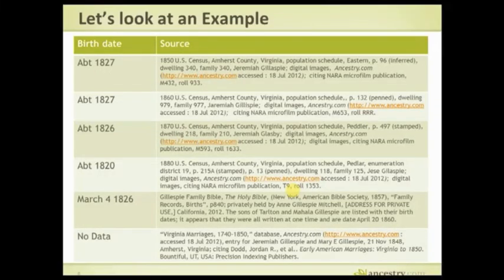Out of all these sources, these are all the possible birth dates I have for Jeremiah. There's the 1850, 1860, 1870, and 1880 censuses. These could be accurate — we hope they are — but they may not be. They give me dates ranging from 1827 and 1826, which are fairly close, but that doesn't mean they're right. And then 1820, which is a nice little outlier.